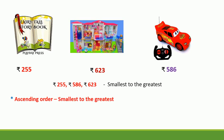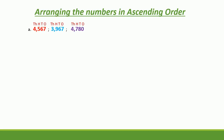Ascending order means smallest to the greatest. So let us learn more about arranging numbers in ascending order. Comparing numbers helps us to put the numbers in order. Ascending order means we arrange the numbers from the smallest to the greatest. Here we have 3 different numbers and we are going to arrange them from smallest to greatest.